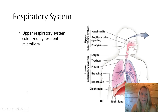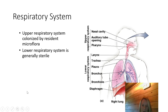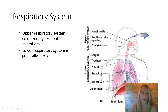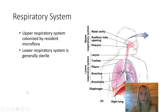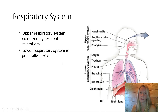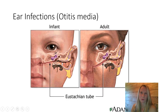The respiratory system is generally grouped into upper and lower respiratory tract. Conditions of the upper respiratory tract are less severe compared to the lower respiratory tract — the lungs are a very fragile part of the body. As for microflora, the upper respiratory tract is colonized, but the lower respiratory tract is not; there shouldn't be any bacteria growing in the lungs. We'll mention one upper respiratory tract infection and then move into lower respiratory tract infections as our main focus.